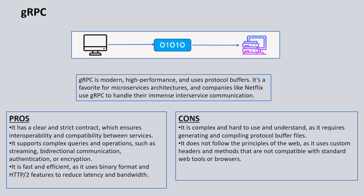GRPC uses fast and efficient binary formats and protocols that are faster than others. The main issue with GRPC is that it also has a very steep learning curve and is difficult to understand because it requires generating and compiling protocol buffer files used as buffers for streaming applications. It also has its own custom headers and methods, so it does not use normal standard web protocols, which contributes to that steep learning curve. The main usage of GRPC is in applications where we need streaming, such as Netflix.